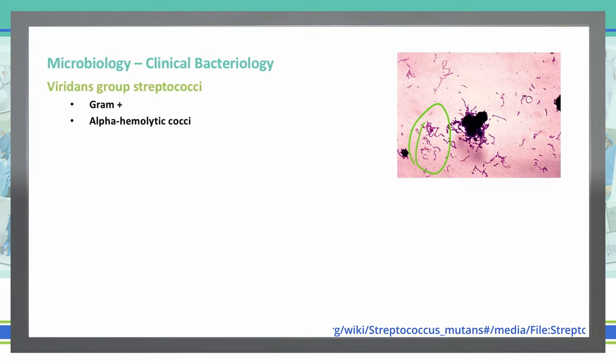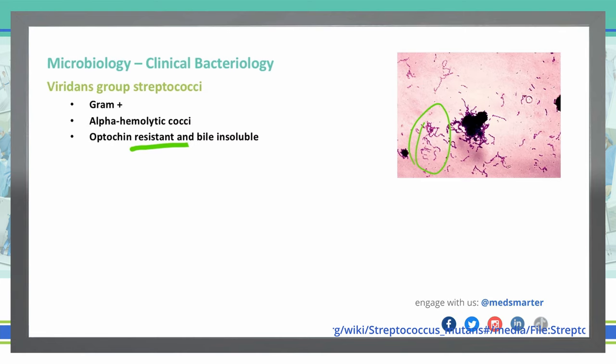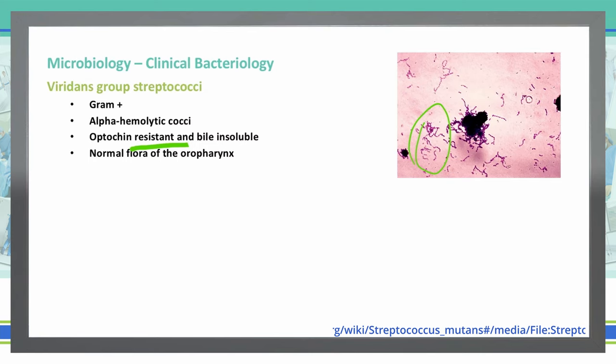The test to differentiate Streptococcus viridans versus Streptococcus pneumoniae is the optochin sensitivity test. Viridans is optochin-resistant and also bile-insoluble. It is normal flora found in the oropharynx, present in every individual as a common occurrence — a swab of the nose would likely reveal viridans Streptococci.